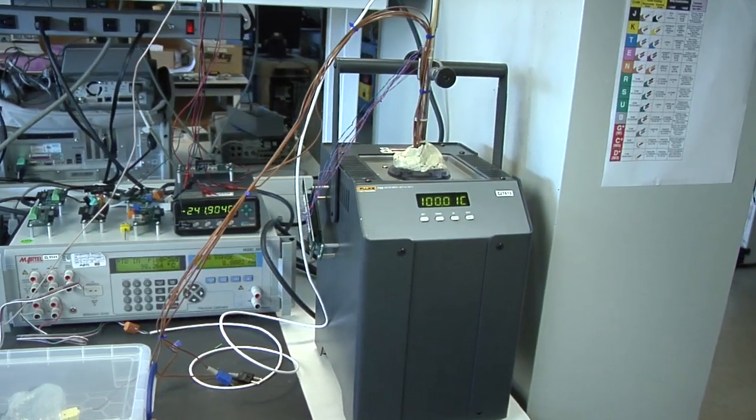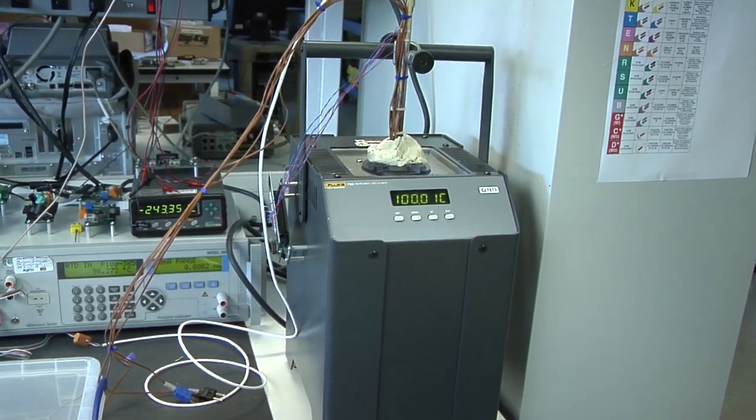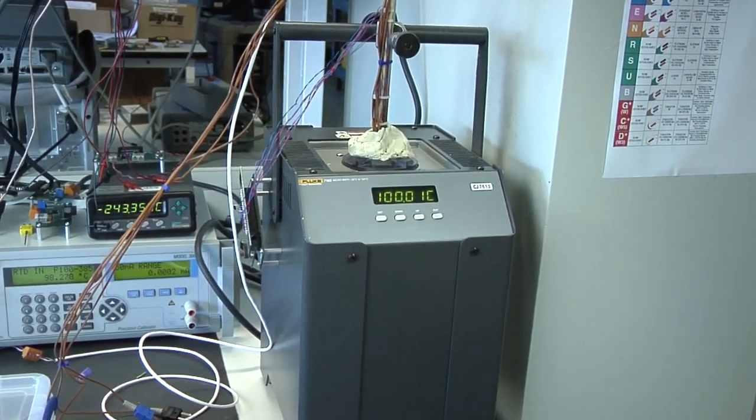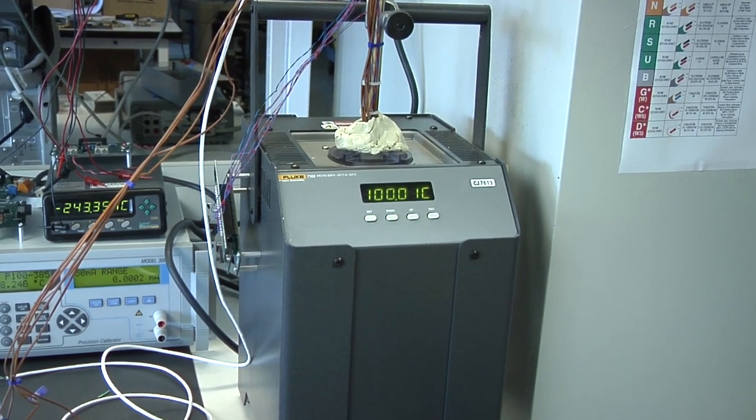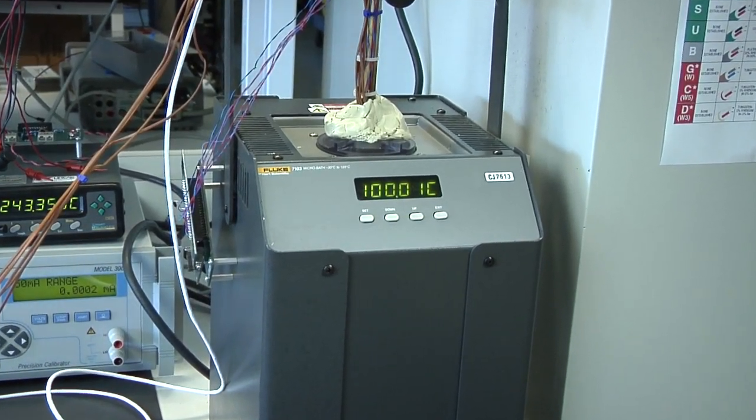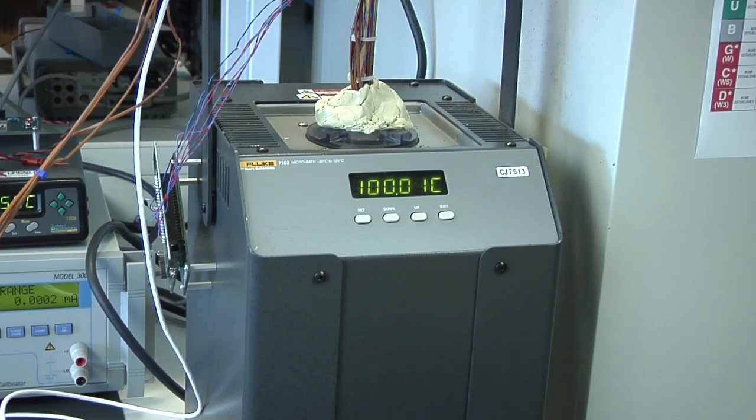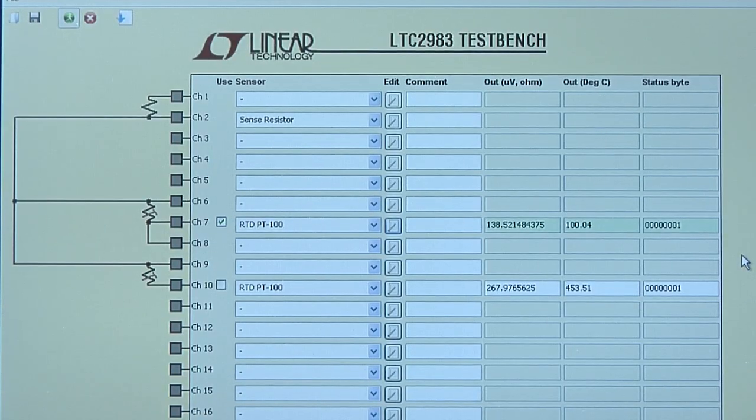An accurate method to measure temperature with a real sensor is a temperature controlled oil bath. In this case, a 4 wire PT100 RTD is inserted in an oil bath set to 100 degrees C.